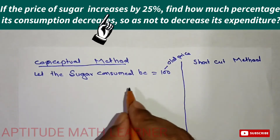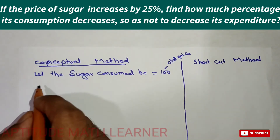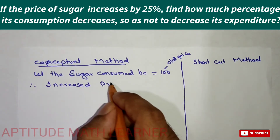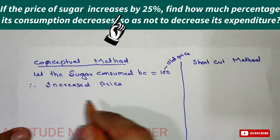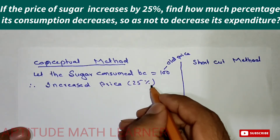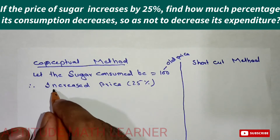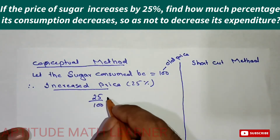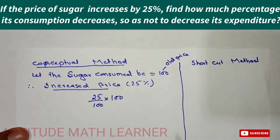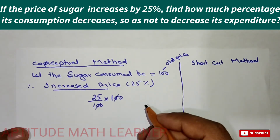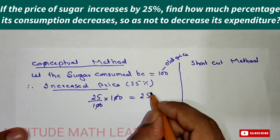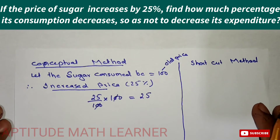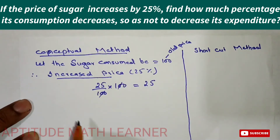Now, how much percent is increased? That is 25 percent. So 25 percent of the old price — 25 percent of 100 — gives us the increased price. 25 percent of 100 cancels out and we get 25. So 25 is the amount by which the price has increased.